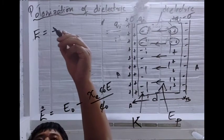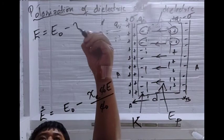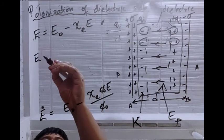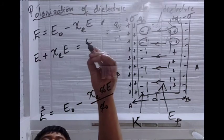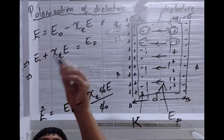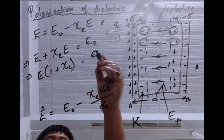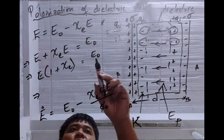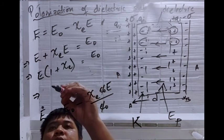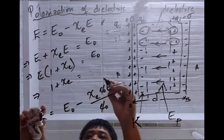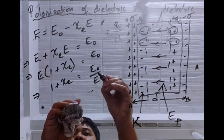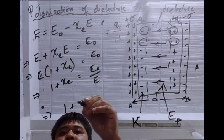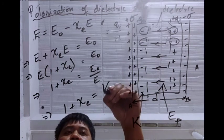So we can write this equation as: E equals E₀ minus P/epsilon_naught, and substituting P = chi_E·epsilon_naught·E, we get E = E₀ minus chi_E·E. Taking chi_E·E to the left side: E plus chi_E·E equals E₀, so E(1 + chi_E) equals E₀, which gives 1 + chi_E equals E₀/E — and E₀/E is the dielectric constant kappa.